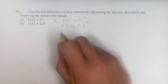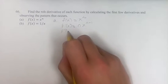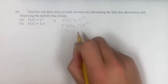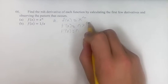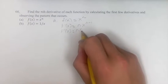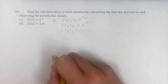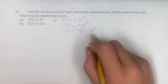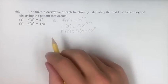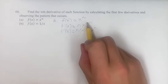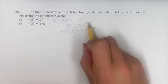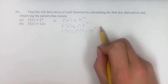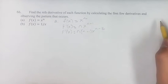Let's find the second derivative. Take out your coefficient first, multiply it by the exponent, and then the new exponent is n minus 1 minus 1, which is n minus 2.